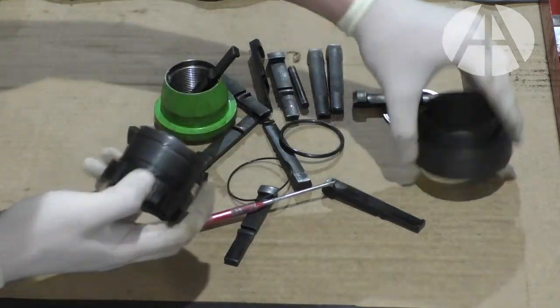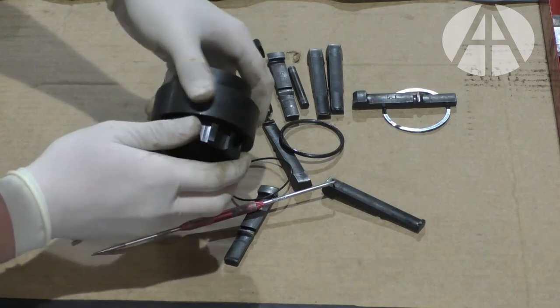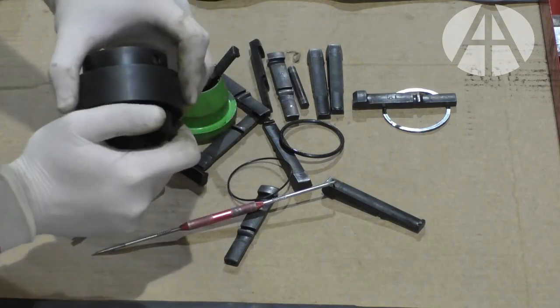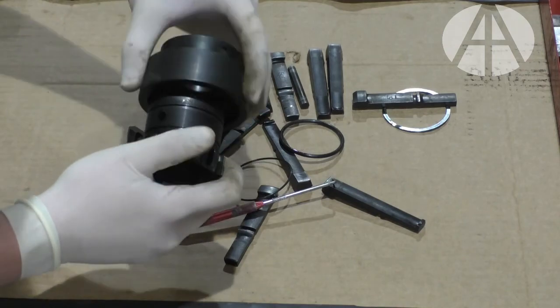All this o-ring is doing is creating some drag between the outer collar and the inner house to keep this from being so sloppy.